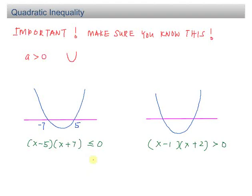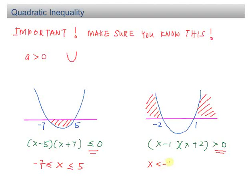If the inequality is less than or equal to 0, shade the lower part of the x-axis and the answer is negative 7 less than or equal to x less than or equal to 5. For the second example, crossing at negative 2 and 1 with more than 0 means shading the upper part: x less than negative 2 or x more than 1. There are only two possible answer forms — make sure you understand both.